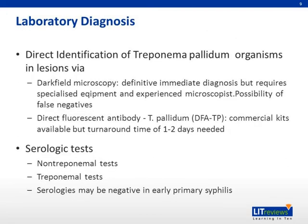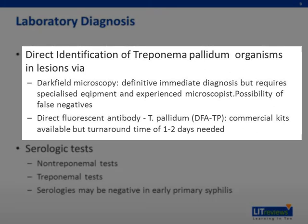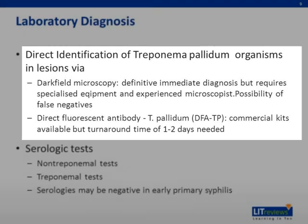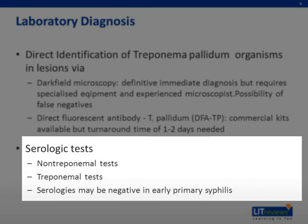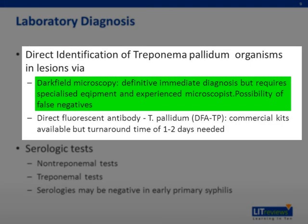Laboratory diagnosis of primary syphilis depends on identification of Treponema pallidum in lesions via dark field microscopy or direct fluorescent antibody testing. Serologic tests — both non-treponemal tests and treponemal tests — may not be positive in the primary stage of the infection. On dark field microscopy, one looks for Treponema pallidum morphology and motility.